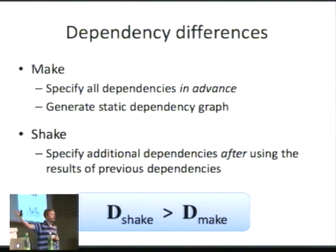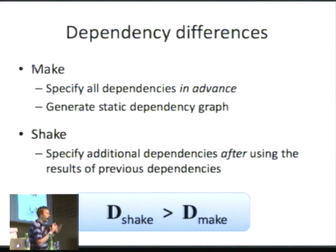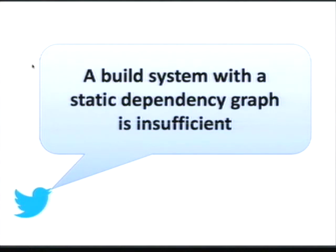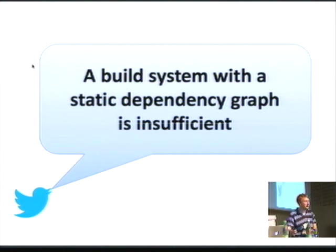There's no real way to do this very simple generated file pattern in Make. Make has millions of extensions, and all of them let you paper over some aspect of this problem, but none of them let you do the full solution. This is the key difference between Shake and Make: in Make, you specify all of your dependencies in advance; in Shake, you can specify additional dependencies after using the results of previous dependencies. So we can generate foo.c and look at it, whereas in Make we cannot. The dependency system in Shake is strictly more powerful than that of Make. A build system with a static dependency graph — one that doesn't let you add dependencies as you go along — is insufficient for anything involving generated files.